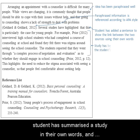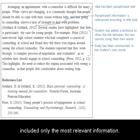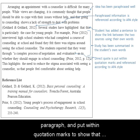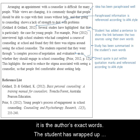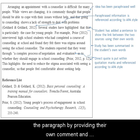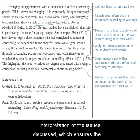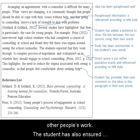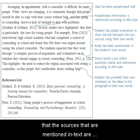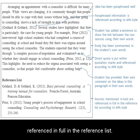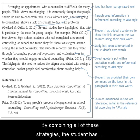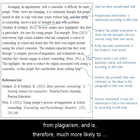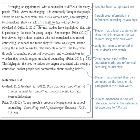In the next section, the student has summarised a study in their own words and included only the most relevant information. The student has incorporated a short direct quote in the paragraph and put it within quotation marks to show that it is the author's exact words. The student has wrapped up the paragraph by providing their own comment and interpretation of the issues discussed, which ensures that the paragraph is not just a description or summary of other people's work. The student has also ensured that the sources mentioned in text are referenced in full in the reference list. By combining all of these strategies, the student has produced an essay that has academic integrity, is free from plagiarism, and is therefore much more likely to receive a good mark.